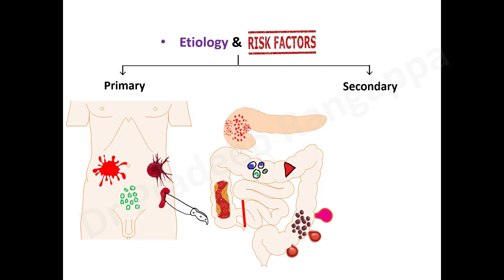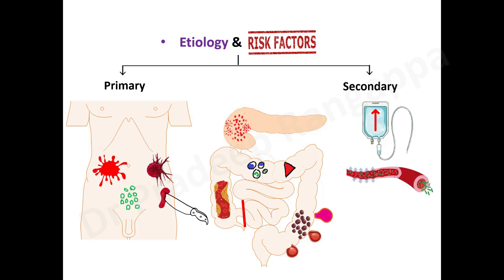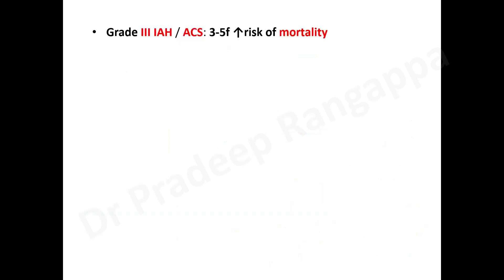Secondary causes are not confined to pathology within the abdomen. Over-resuscitation is increasingly recognized as a major contributor — cumulative positive fluid balance leads to increased morbidity partly by increasing intra-abdominal pressure and causing abdominal compartment syndrome. We now contemplate over-resuscitation and venous congestion as causes of organ dysfunction. Severe sepsis and burns are also secondary causes.